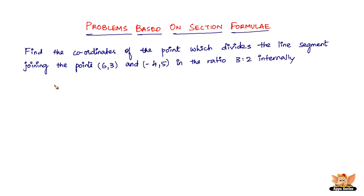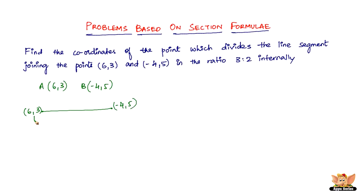It's a pretty simple problem. We've got a line segment joining the points. Let these points be A(6, 3) and B(-4, 5). It divides the line segment joining these points in the ratio 3 to 2 internally. Say it is divided at a point — let this point be P of x comma y. Now, m is to n, that is 3 is to 2.